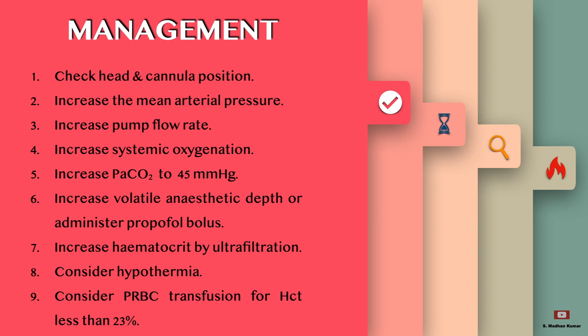Increase volatile anesthetic depth or administer propofol bolus, increase hematocrit by ultrafiltration, consider hypothermia, and consider PRBC transfusion for hematocrit less than 23%.